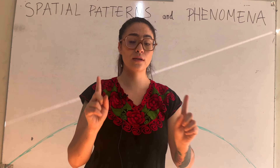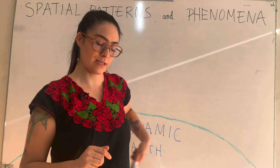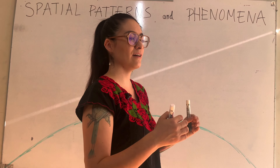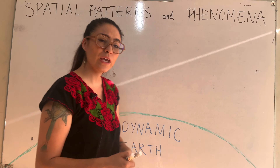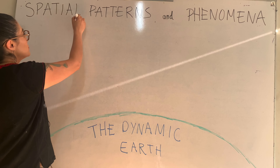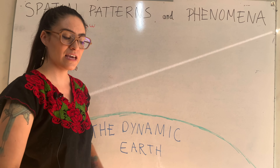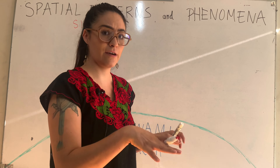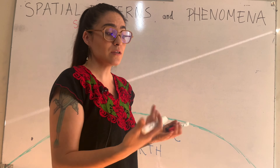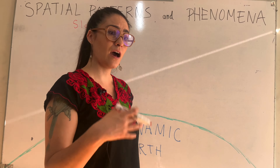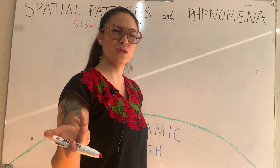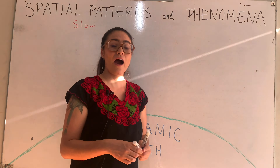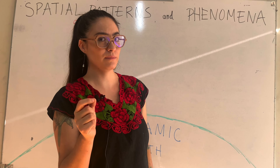We are going to classify those types of processes into two categories. The processes that are really slow, continuous, and predictable we call spatial patterns. These are slow processes on the planet, creating things like mountains in really slow motion. For example, Mount Everest is growing higher by about three centimeters a year. Because they are a pattern, we can predict them.